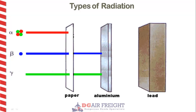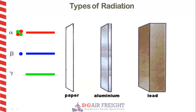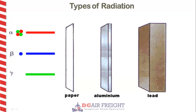Gamma rays are waves, not particles, and have a high penetrating power. It takes a thick sheet of metal, such as lead, or concrete to reduce them significantly.